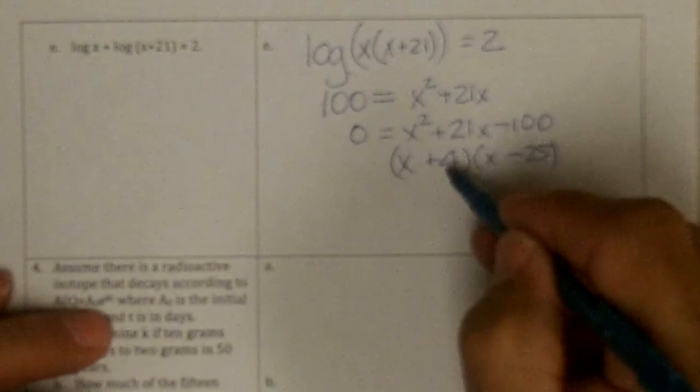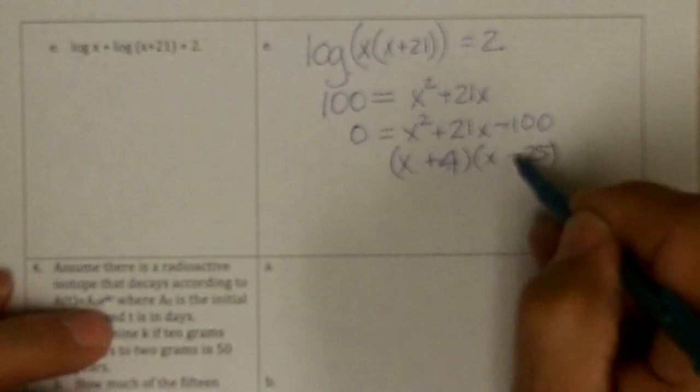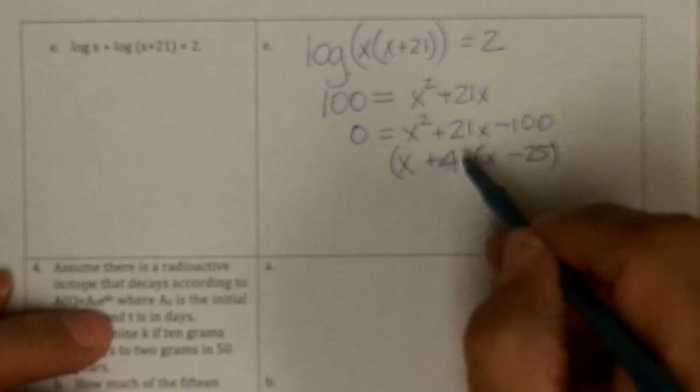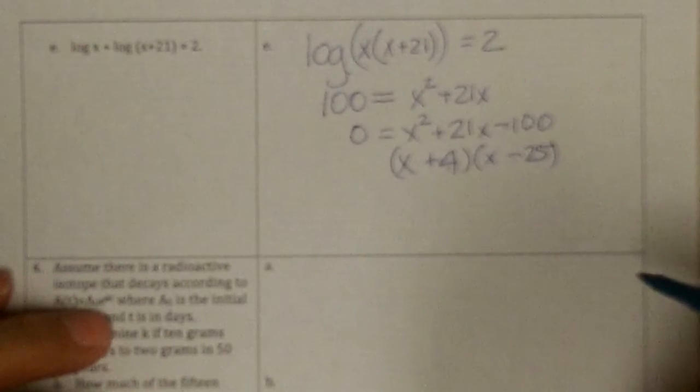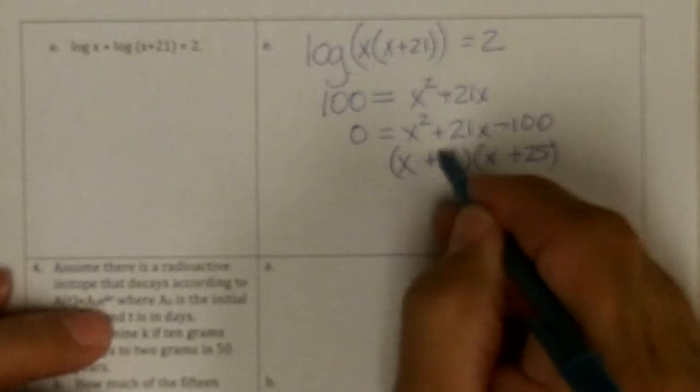25 will multiply to be 100, negative 100 with a negative 25, but this will make negative 25 and plus 4, and it's got to be plus 21, so I've got to be plus here and negative on the 4.